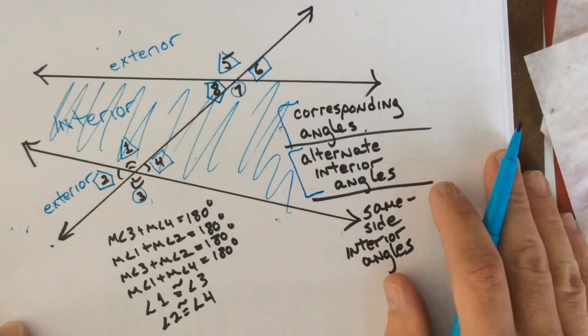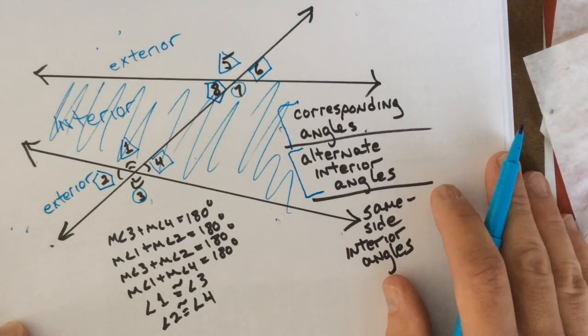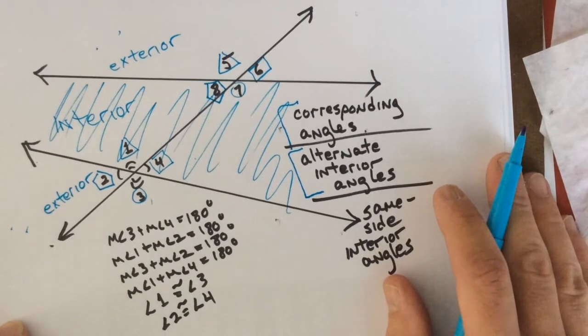Which ones are on the same side? Same side interior angles. Yeah. One and eight. And? Four and seven. You guys are good.